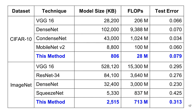This slide compares the method with several other methods in terms of model size, number of operations per image, and error rate, across two datasets: CIFAR-10 and ImageNet. The tree module neural networks are much smaller in terms of size and number of operations. For test errors, this method is slightly higher for CIFAR-10 but comparable for ImageNet.